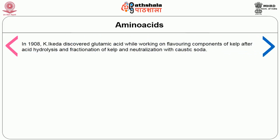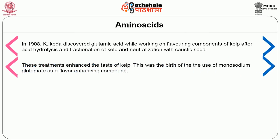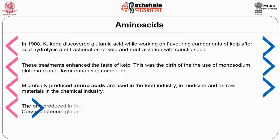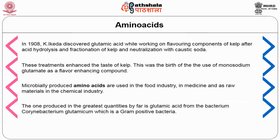First let us see about amino acids. In 1908, Ikeda discovered glutamic acid while working on flavoring components of kelp. After acid hydrolysis and fractionation of kelp and neutralization with caustic soda, these treatments enhanced the taste of kelp. This was the birth of the use of monosodium glutamate as a flavor-enhancing compound. Microbially produced amino acids are used in the food industry, in medicine and as raw materials in the chemical industry. The one produced in the greatest quantities by far is glutamic acid, from the bacterium Corynebacterium glutamicum, which is a gram-positive bacterium.